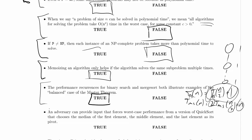An adversary can provide input that forces worst-case performance from a version of quicksort that chooses the median of the first element, the middle element, and the last element as its pivot. The answer to this is true. The adversary can just figure out, let's think of it this way. We know worst-case performance exists for quicksort, regardless of the fact that it's chosen the pivots in this way, because it's not guaranteed to choose a pivot that is good, that cuts out a constant fraction of the problem. So then we could just try all orderings and see which one produces the worst performance. That's obviously a ridiculous algorithm, but you could totally do it.